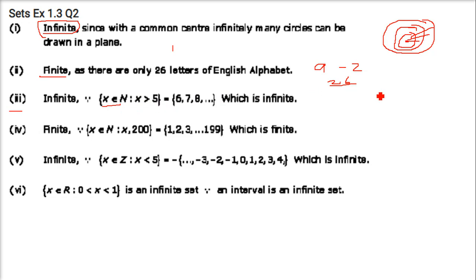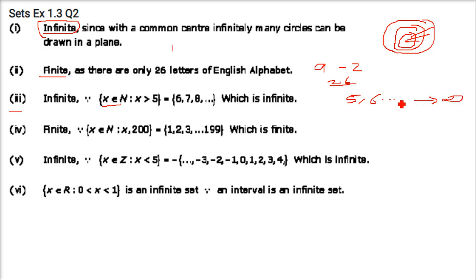Third: x ∈ ℕ such that x > 5. Starting from 6, this is left open-ended and can go up to infinity — it is uncountable. This is an infinite set. The next one is finite.